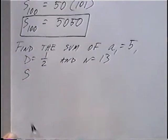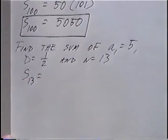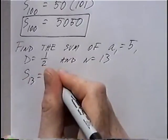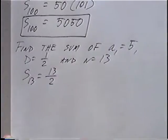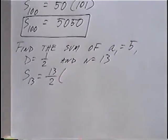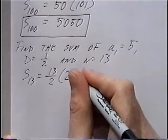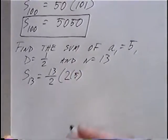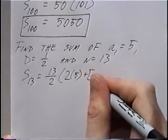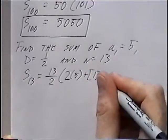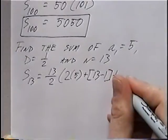So S sub n, with n equal to 13, gives us S sub 13. Using the second formula: n over 2, which is 13 over 2, times the quantity 2 times a sub 1 — which is 5 — plus n minus 1, which would be 13 minus 1, times the difference, which is one-half.